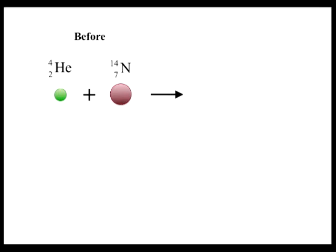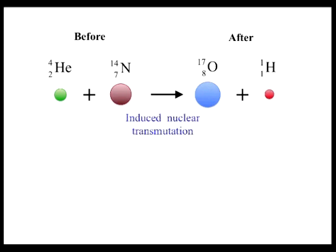In 1919, Ernest Rutherford observed that when an alpha particle strikes a nitrogen nucleus, an oxygen nucleus and a proton are produced. Before the collision, there is an alpha particle or helium nucleus and a nitrogen-14 nucleus. They collide or interact which results in an oxygen-17 nucleus plus a proton or hydrogen nucleus. Because the incident alpha particle induces the transmutation of nitrogen into oxygen, this reaction is an example of an induced nuclear transmutation.